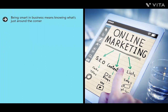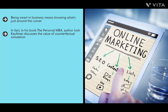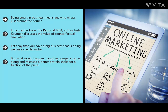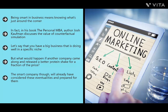Being smart in business means knowing what's just around the corner — thinking ahead and preparing for inevitable changes. In his book The Personal MBA, author Josh Kaufman discusses counterfactual simulation: imagining future possibilities and preparing for them. Consider a company that sells whey protein shakes — what if a competitor released a better product at a fraction of the price? What if new research revealed whey protein was harmful? Any of these could shake up even the most established business. The smart company will have already considered these eventualities.